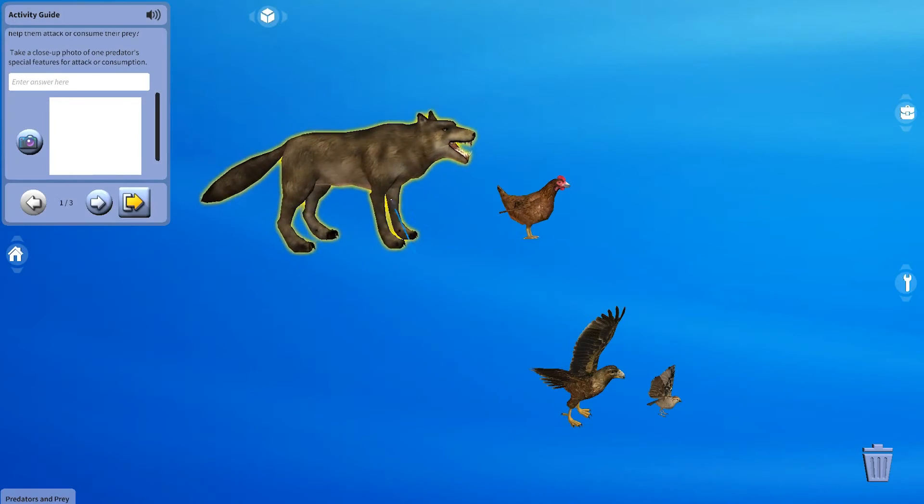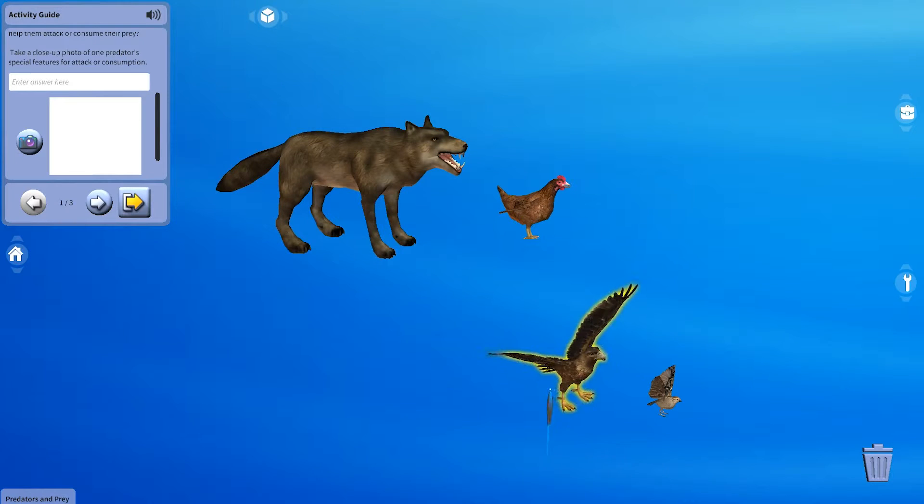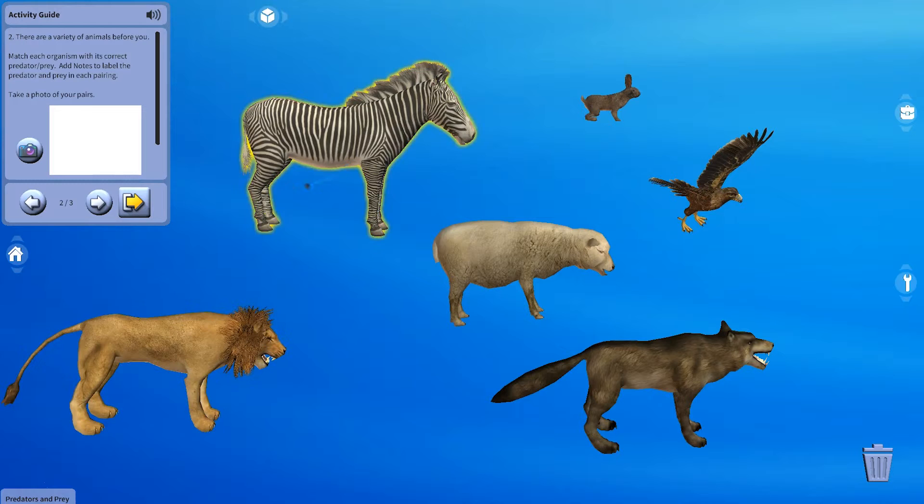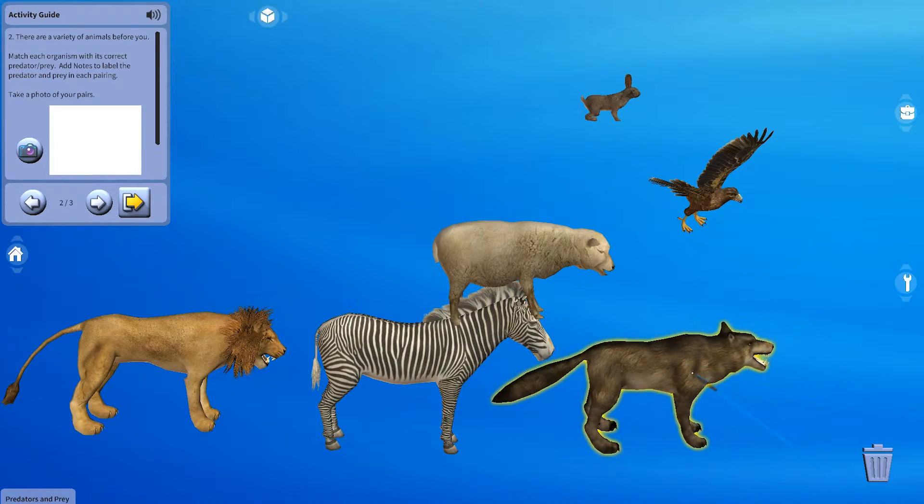An ecosystem is a community in which living and non-living things interact in order to survive. Predation is a type of relationship in which one organism kills and consumes another organism.